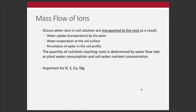The next mechanism is mass flow, which is particularly important for nitrogen and sulfur, and some for calcium and magnesium. Mass flow is when ions are transported to the root with water. As plants take up water via transpiration, they're pulling water into the roots and ions — especially nitrate — come along with it. Water evaporation at the soil surface and percolation through the soil profile are other ways water moves, bringing nutrients with it. The quantity of nutrient available is often determined by the flow rate and how much water the plant is consuming over time.